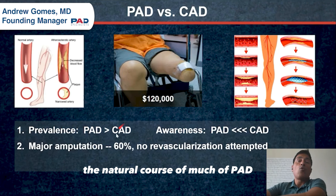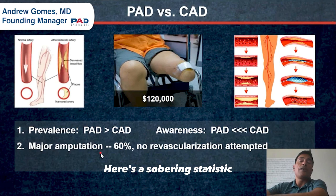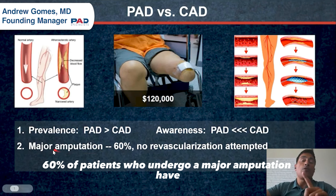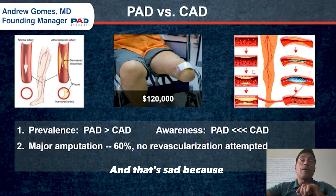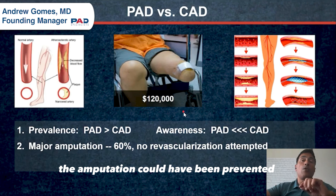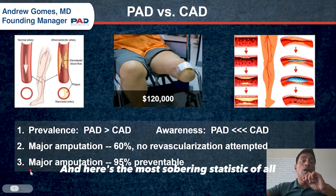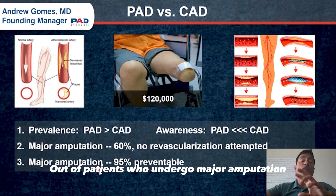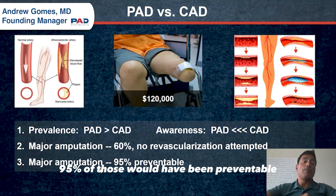The natural course of much of PAD, not all, is major amputation. Here's a sobering statistic: 60% of patients who undergo major amputation have never had a single revascularization procedure attempted. That's sad, because many of them, if caught or triaged early enough, could have had amputation prevented or at least postponed for years. And the most sobering statistic: 95% of those amputations would have been preventable.